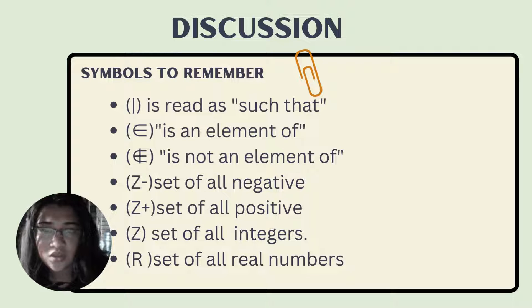Before we proceed to our discussion or our examples, take note of the symbols to remember. I is read as "such that", E is "an element of", E with a slash is "not an element of", negative Z is set of all negatives, positive Z is set of all positive, Z is set of all integers, and R is set of all real numbers.